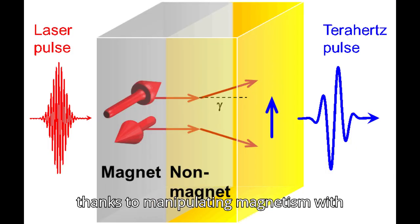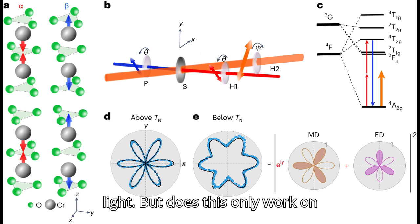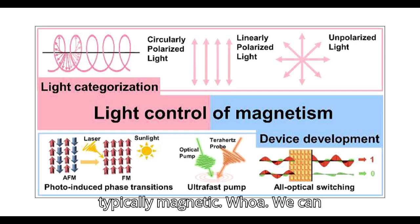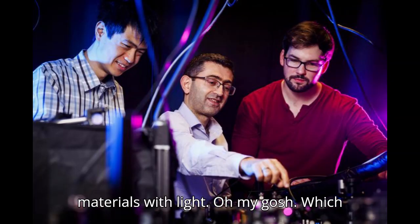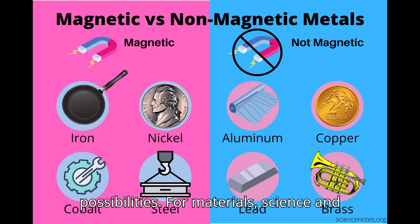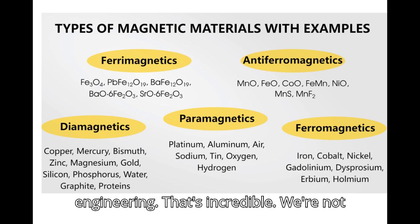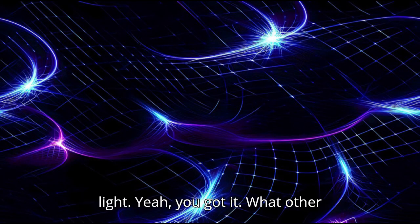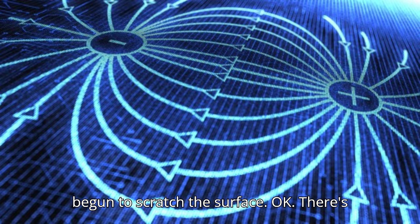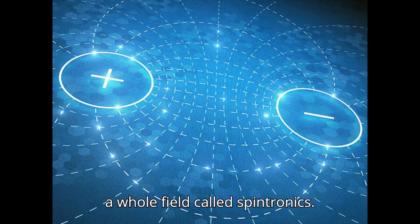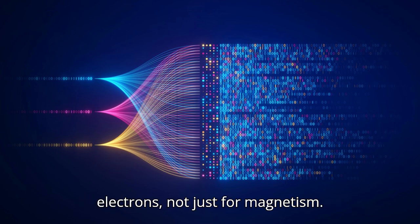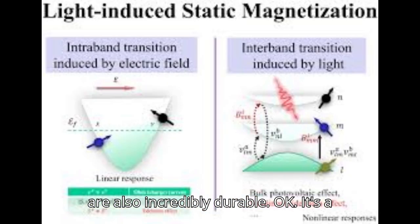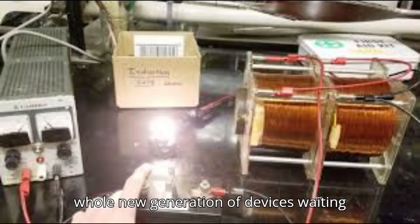So we've covered energy efficient electronics, data storage, and quantum computing, all thanks to manipulating magnetism with light. But does this only work on materials that are already magnetic? That's one of the most exciting aspects. It can be used to make materials magnetic that aren't typically magnetic. We can essentially create brand new magnetic materials with light, which opens up a whole new world of possibilities for materials science and engineering. We're not limited to what nature gives us anymore. There's a whole field called spintronics, which uses the spin of electrons not just for magnetism but for information processing and storage as well. Imagine ultra fast, low-power electronics that are also incredibly durable.